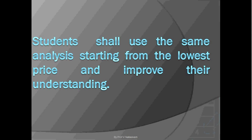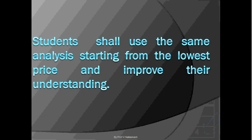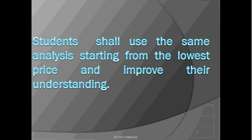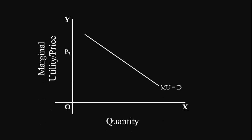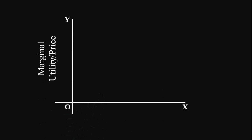Students shall use the same analysis starting from the lowest price to improve their understanding. Graphically also we can explain the same thing. Look at this graph. The marginal utility curve is sloping downwards from left to right, showing that marginal utility diminishes with every increase in consumption.